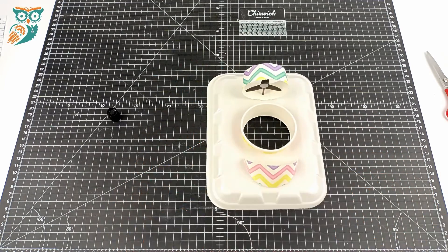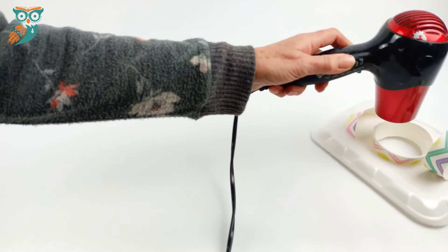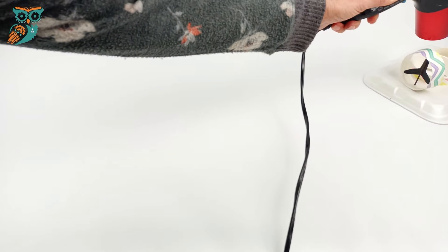And there you go, our hovercraft is done. This quick and easy STEM experiment is so much fun. All you do is take a hairdryer, aim it in the middle of the hole there and watch your hovercraft move.